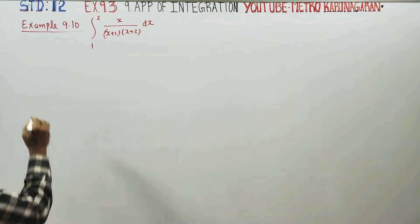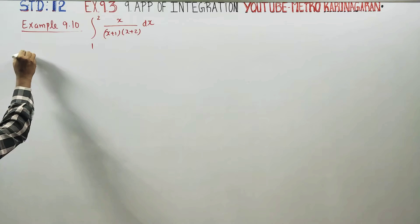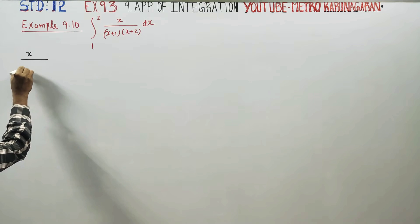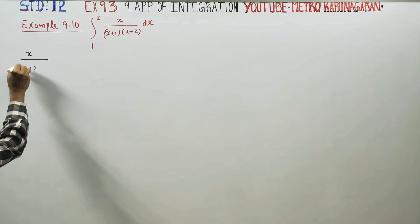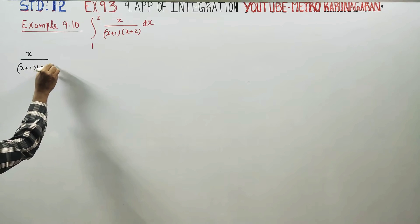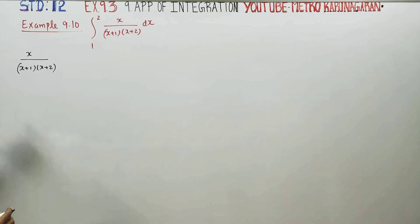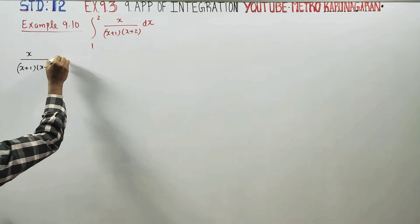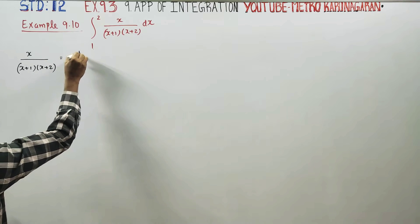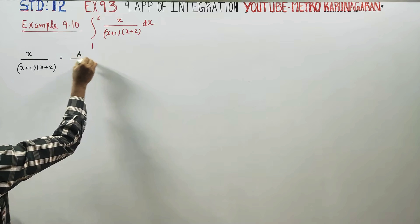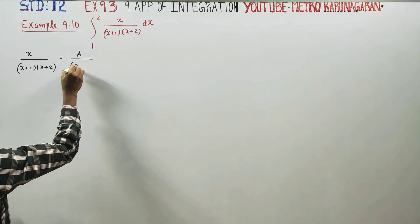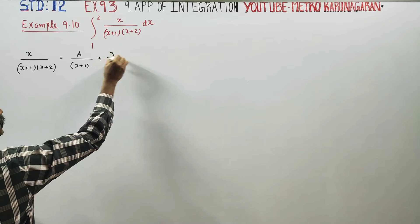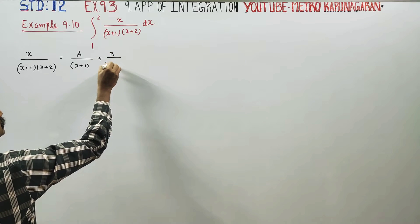I am going to split this expression into partial fractions: x plus 1 and x plus 2. Both are linear factors. So we write the partial fractions as A by (x plus 1) plus B by (x plus 2).